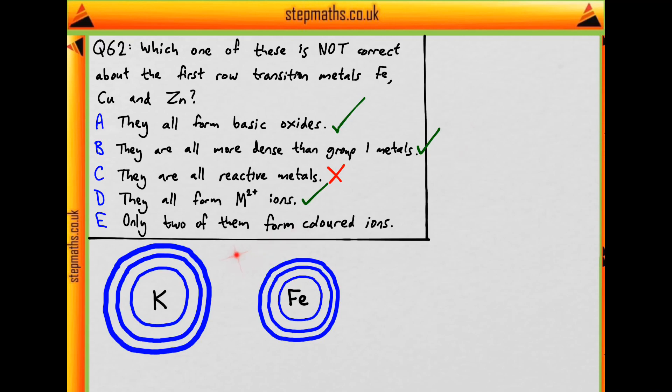And finally, we're told that only two of them form coloured ions. So which two is this? That's iron and copper. So why isn't zinc coloured? Well, zinc isn't actually a transition metal, even though it's included usually in the series, because it doesn't form a common ion with a partially complete D-shell.